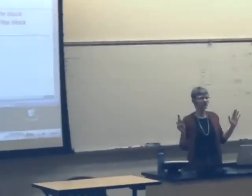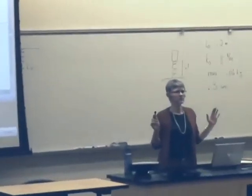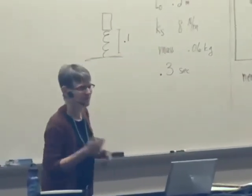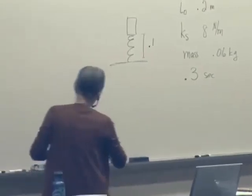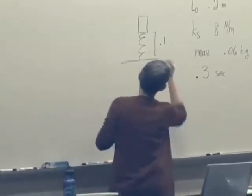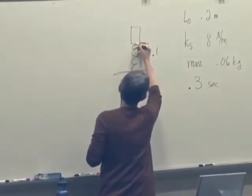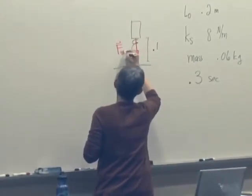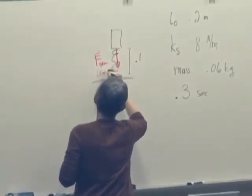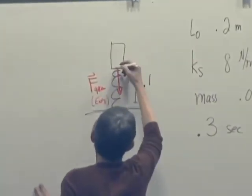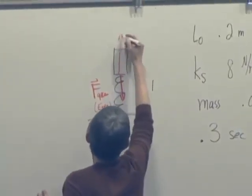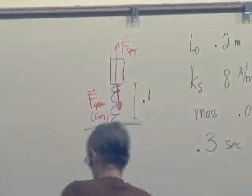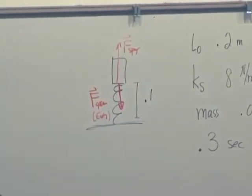Let's just talk about what we have to do to calculate the net force in step one, and then we will let a computer do it for us. We are going to have two things going on: we have the gravitational force due to the earth, and we have some upward force due to the spring. So the net force is going to be the sum of those two forces.